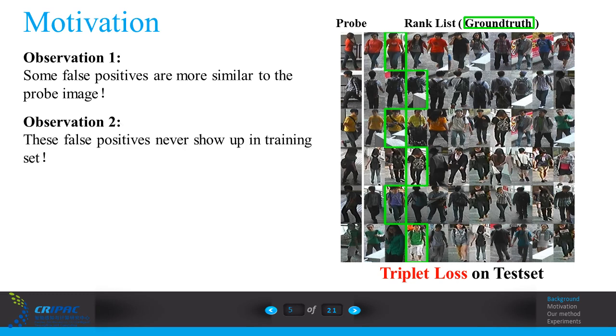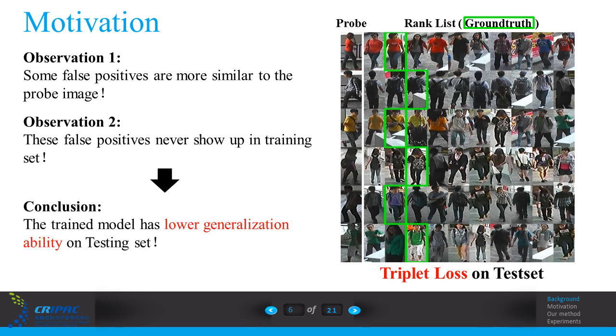What's more, as we know, these false positives never show up in training set. Therefore, we conclude that the trained model with the triplet loss has a lower generalization ability on testing set.